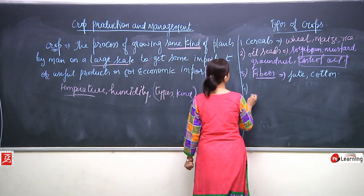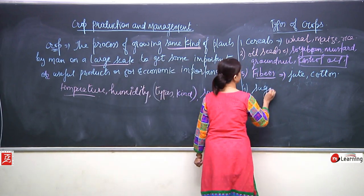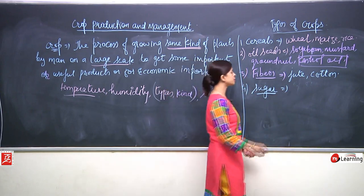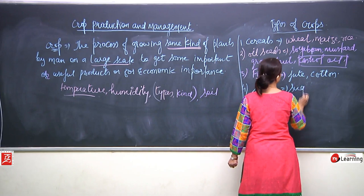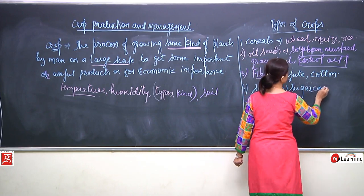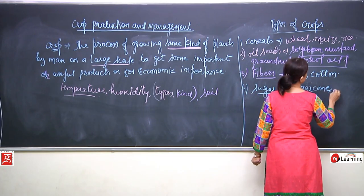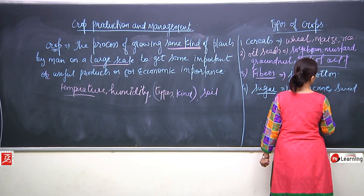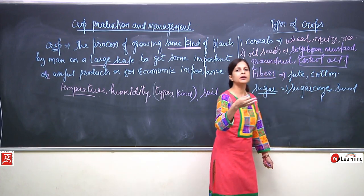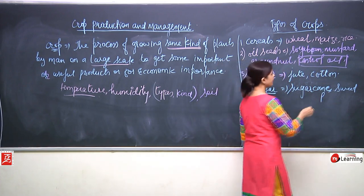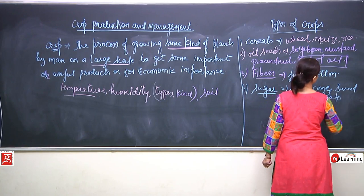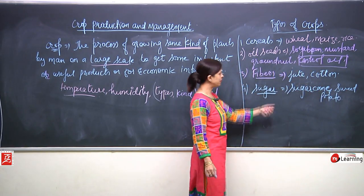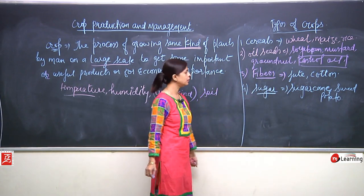The next one can be sugar. From where do we get sugar? Which plant is responsible? Sugarcane. And it is not only about sugar — even sweet potato can be a plant related to sugar.